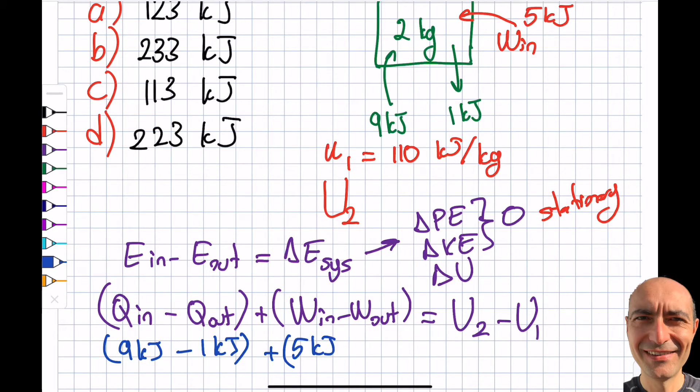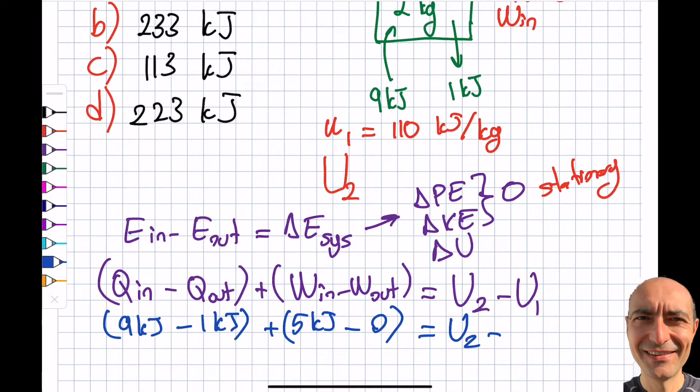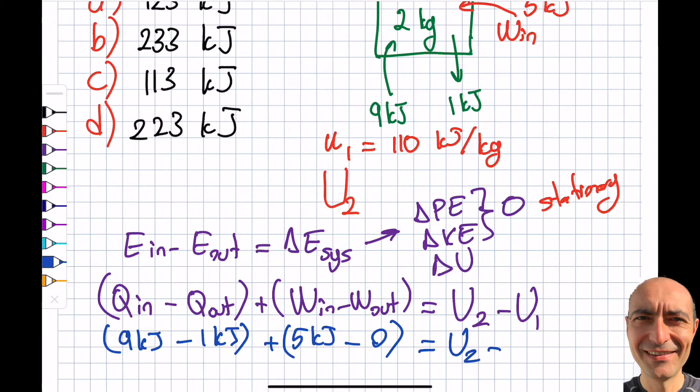I get 5 kilojoules entering my system because it says the work done on the system, minus the work out. I wasn't getting any information about work done by the system. Then this will be U2, which is being asked of me, minus capital U1. I am given the specific internal energy, and as my system includes 2 kilograms, this will be 110 kilojoules per kilogram times 2 kilograms.